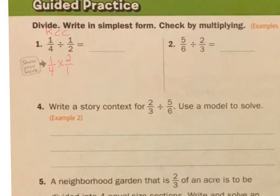Then 1 times 2 is 2, 4 times 1 is 4. I'm going to simplify that by dividing each side by 2, gets me 1 half. So there's my answer, 1 half.